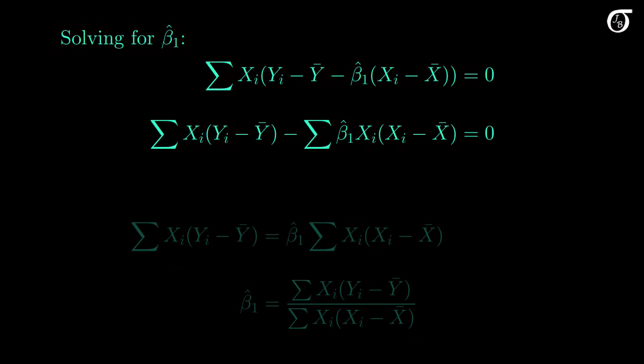Now we can recognize that, with respect to the summation, beta1 hat is a constant, and can come outside of the summation. And moving that term to the other side, we end up with this. Now dividing through, we have an expression for beta1 hat. Let's look at this on the next page.